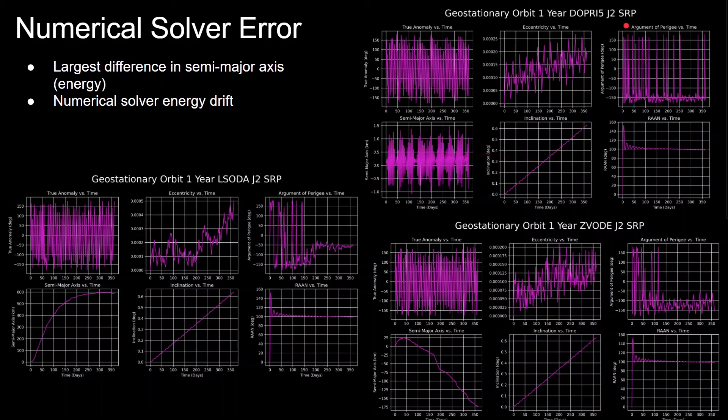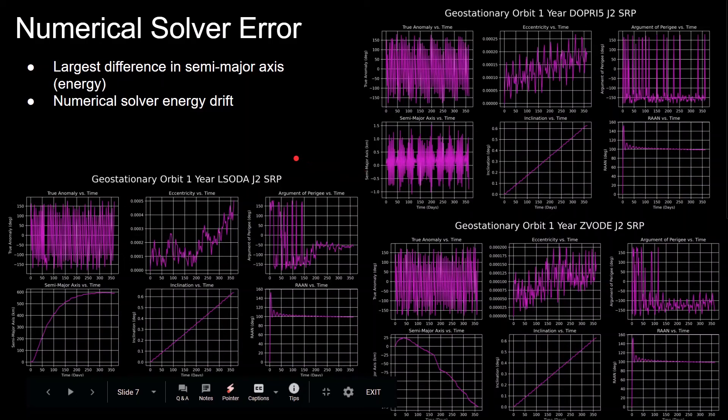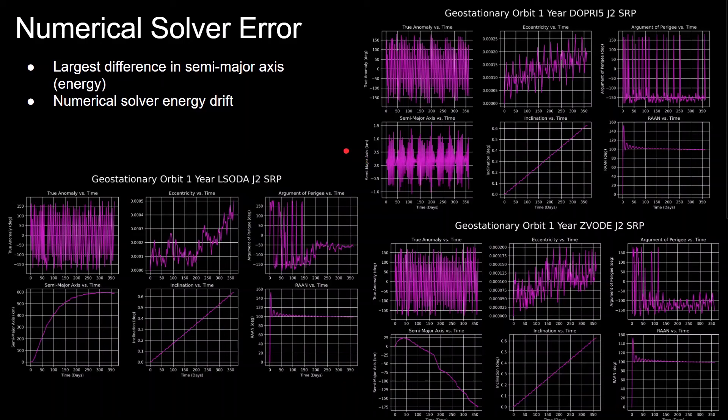On the top right, we have DOPRI-5, which is a Runge-Kutta 4-5 solver, which shows that the semi-major axis is oscillating over time. On the bottom right, we have Zvode, which shows the semi-major axis decreasing by roughly 175 kilometers. On the bottom left, we have LSODA, which shows the semi-major axis increasing by about 600 kilometers.